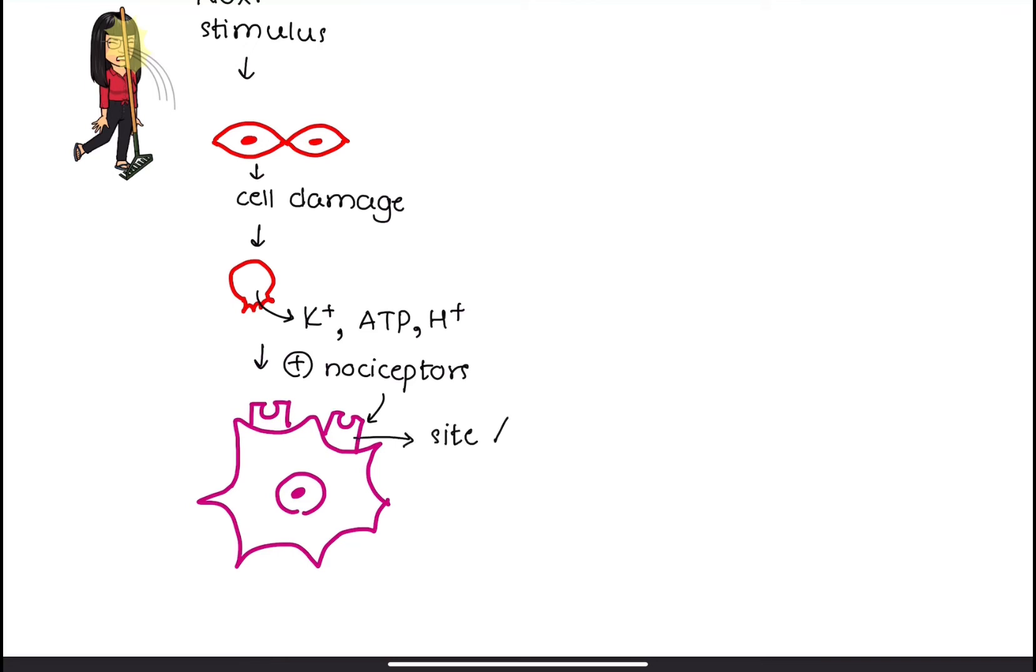Nociceptors can be external, found in the skin, especially at the fingertips, hands, and face. They can also be internal, within the muscles, joints, bones, and internal organs.